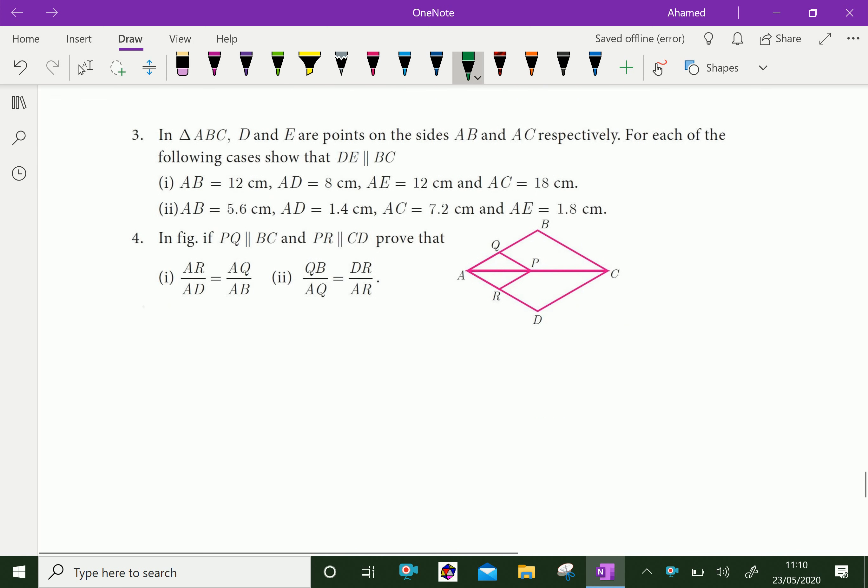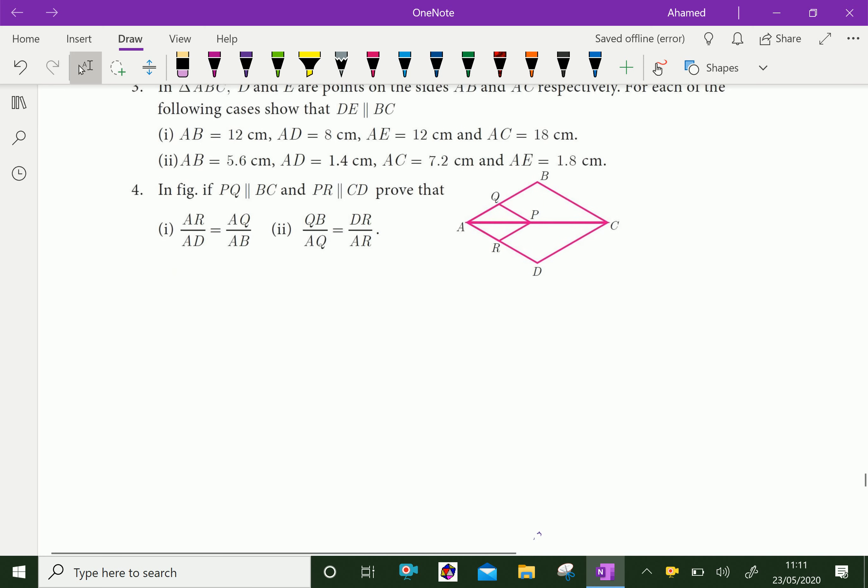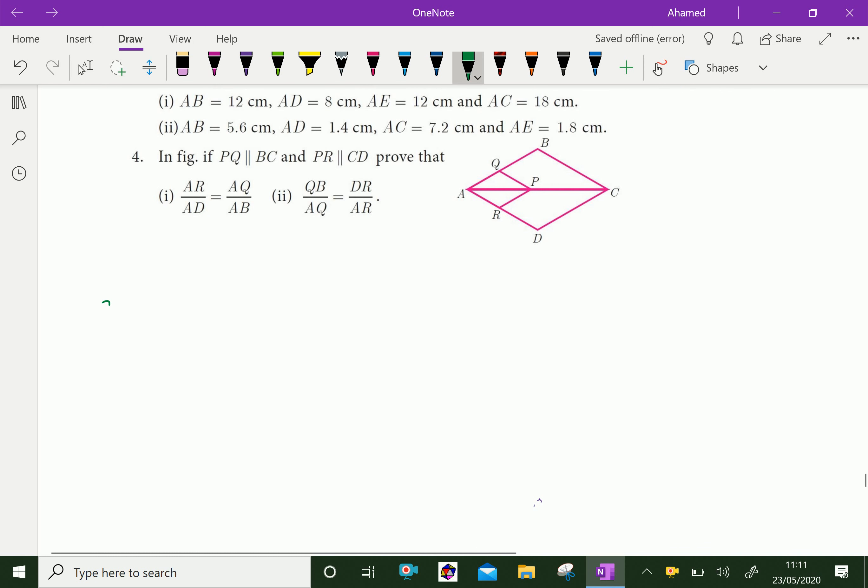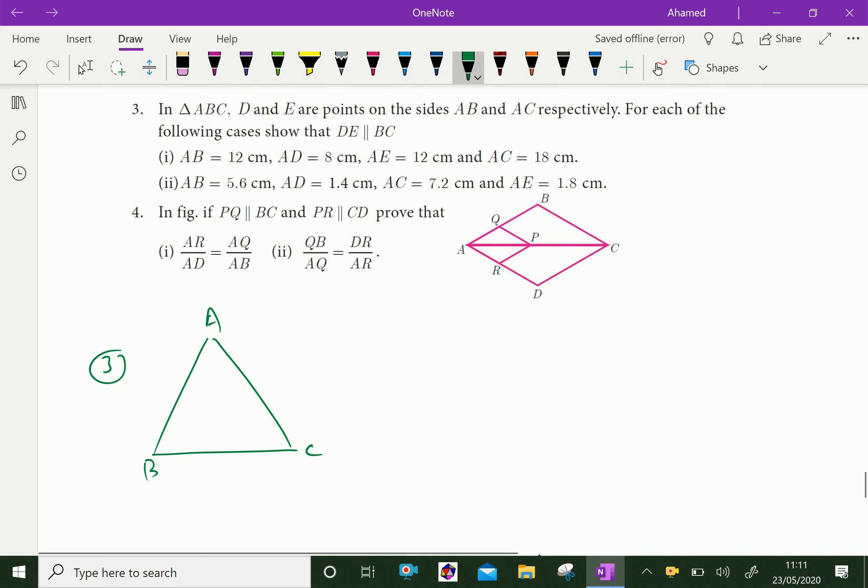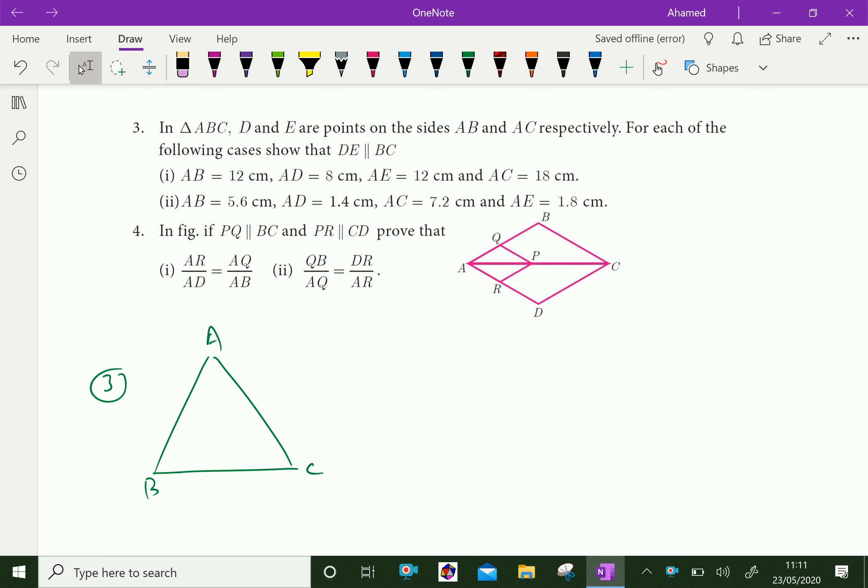Now, question number 3. In triangle ABC, D and E are points on the sides AB and AC respectively. For each of the following cases show that DE parallel to BC. Now, question number 3. In triangle ABC, D is any point on AB and AC.